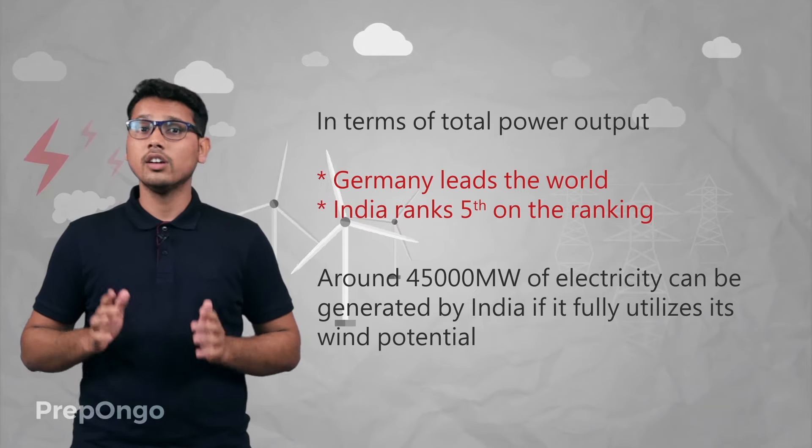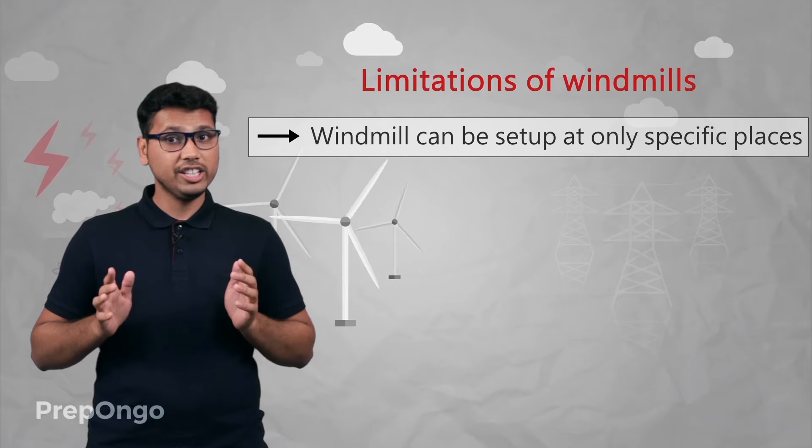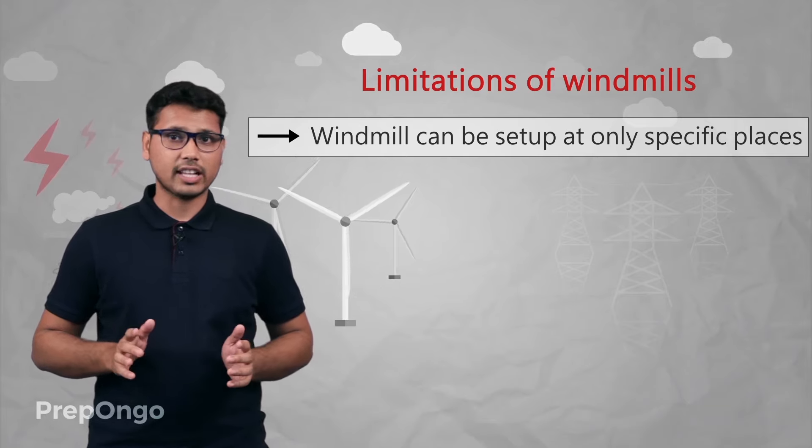It is estimated that if India could fully utilize its wind potential, it could generate around 45,000 megawatts of energy using windmills. Though wind energy is an efficient and environment-friendly source of renewable energy, there are some limitations. For example, wind doesn't flow at all times and its speed also varies at different times.